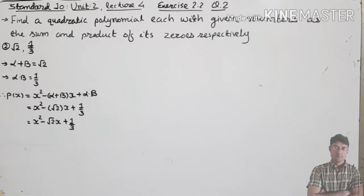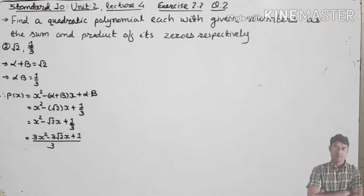For the second question: the sum of the zeros is root 2 and the product of the zeros is 1/3. For a polynomial with zeros alpha and beta, the sum is alpha plus beta and the product is alpha into beta. The polynomial formula is x squared minus (alpha plus beta)x plus alpha into beta. Putting alpha plus beta equals root 2 and alpha into beta equals 1/3.